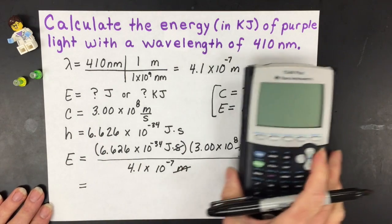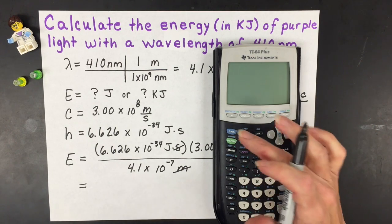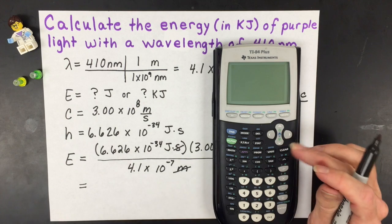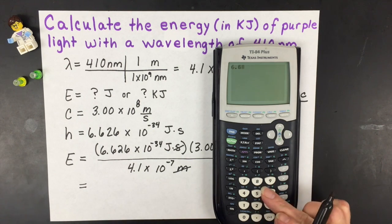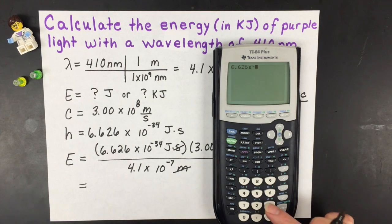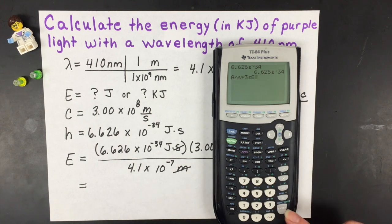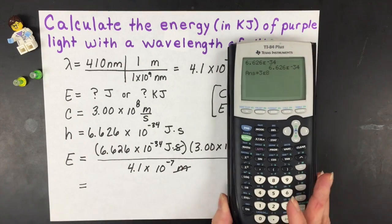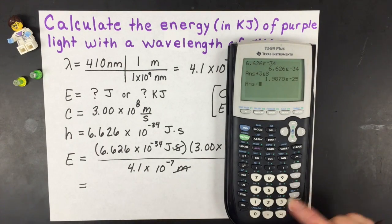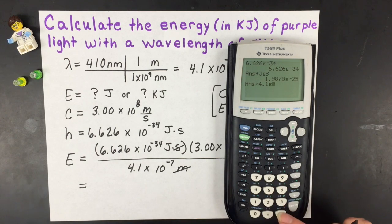And just in case you have a different calculator than a typical TI-30, if you have a graphing calculator, the button pushing is a little bit different. So you have 6.626, you have to hit second comma to get that exponential notation and then negative 34, times 3, again second comma, and then to the eighth for the speed of light. And then you're going to divide that by 4.1 to the exponent of negative 7, because that's the meters.